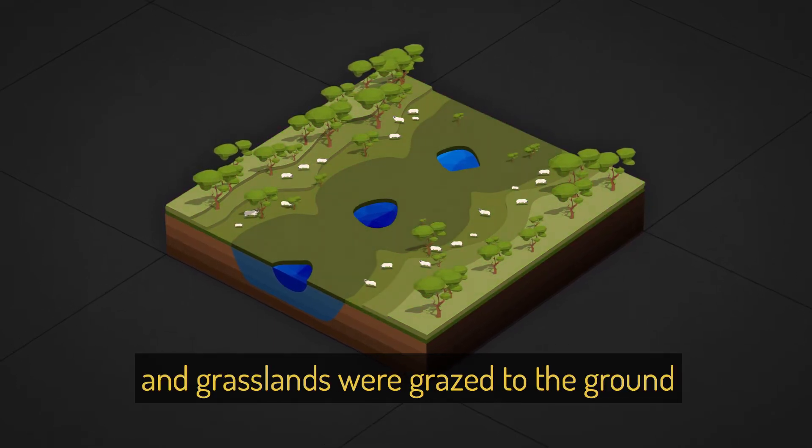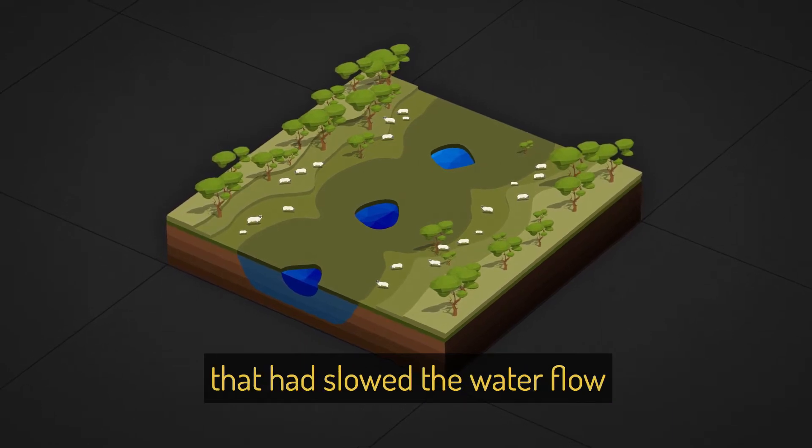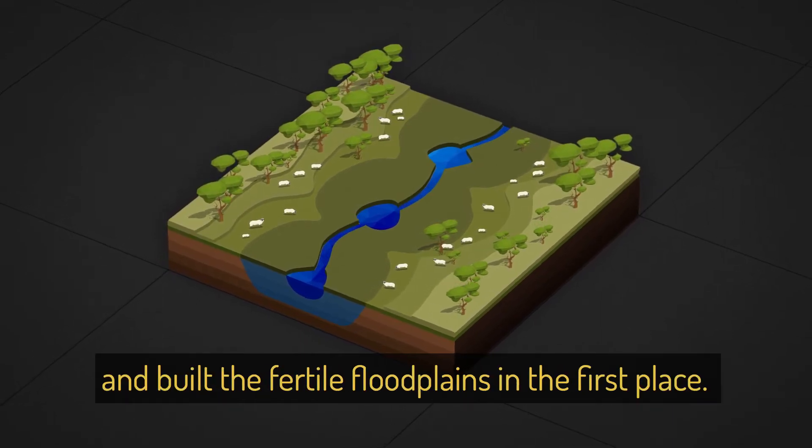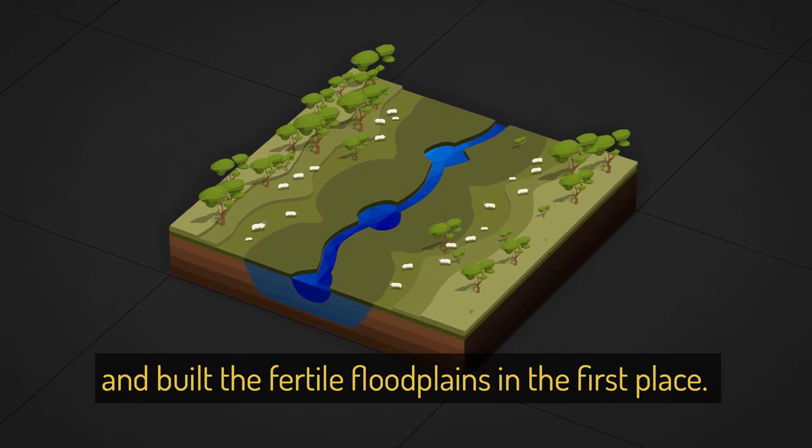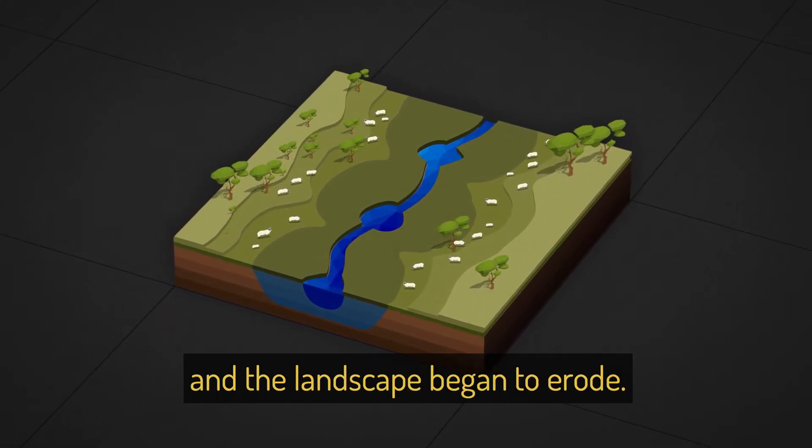Trees were cleared and grasslands were grazed to the ground, removing the very vegetation that had slowed the water flow and built the fertile floodplains in the first place. The water picked up speed and the landscape began to erode.